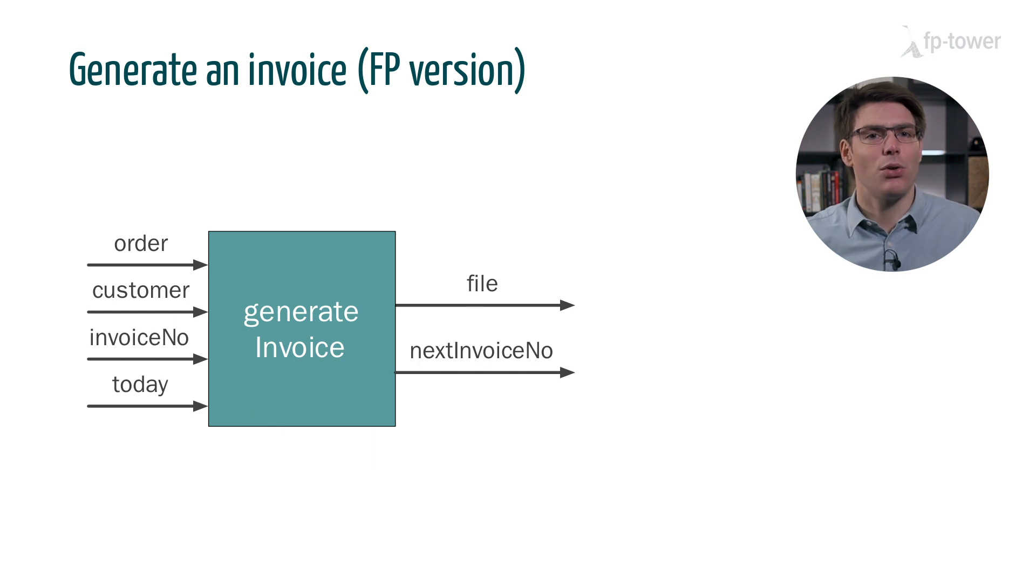There are several solutions, but I would first suggest to clearly express all the inputs and outputs of generate invoice. For example, we can add the invoice number and today's date as parameters. And as we discovered earlier, this will help with testing. We can also change the return type of the function to produce a file and the next invoice number. This way, if we need to generate several invoices for different orders, we can pass the next invoice number to the following phase.